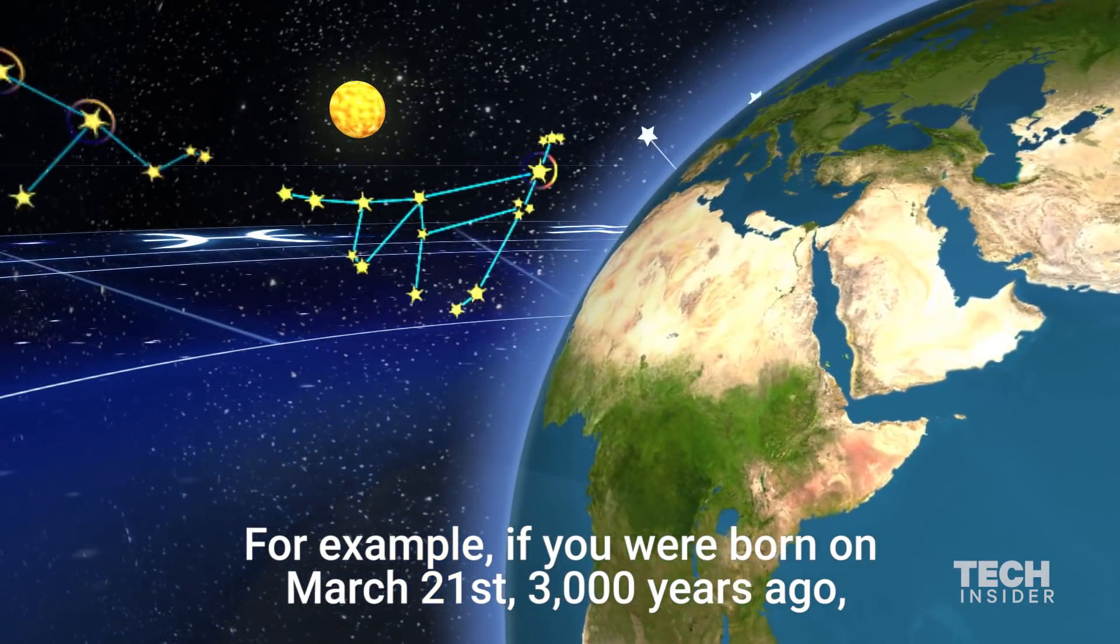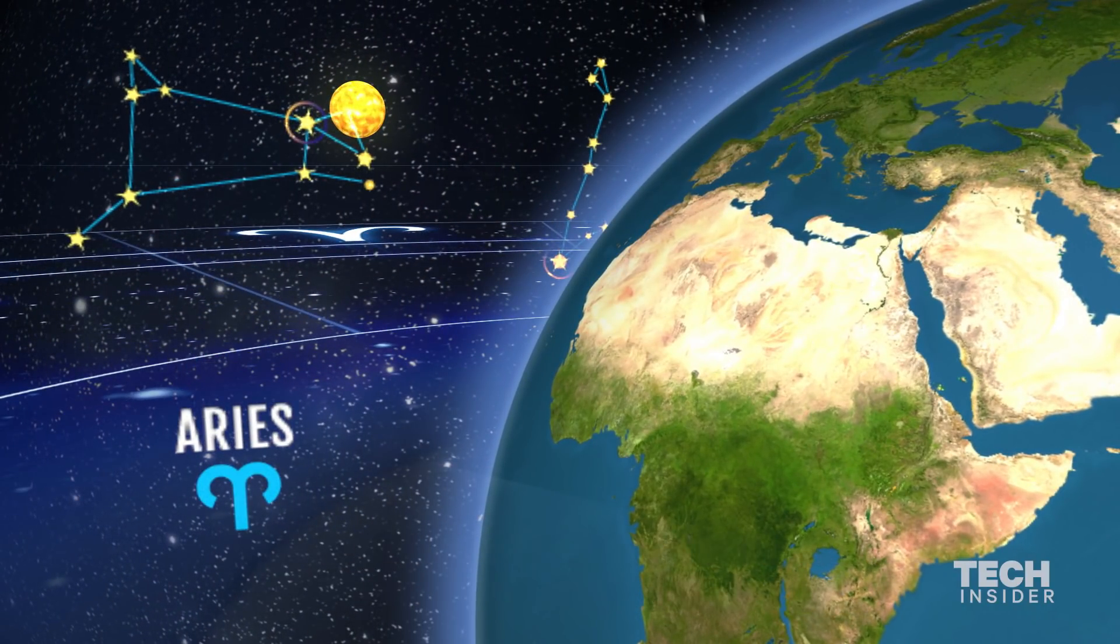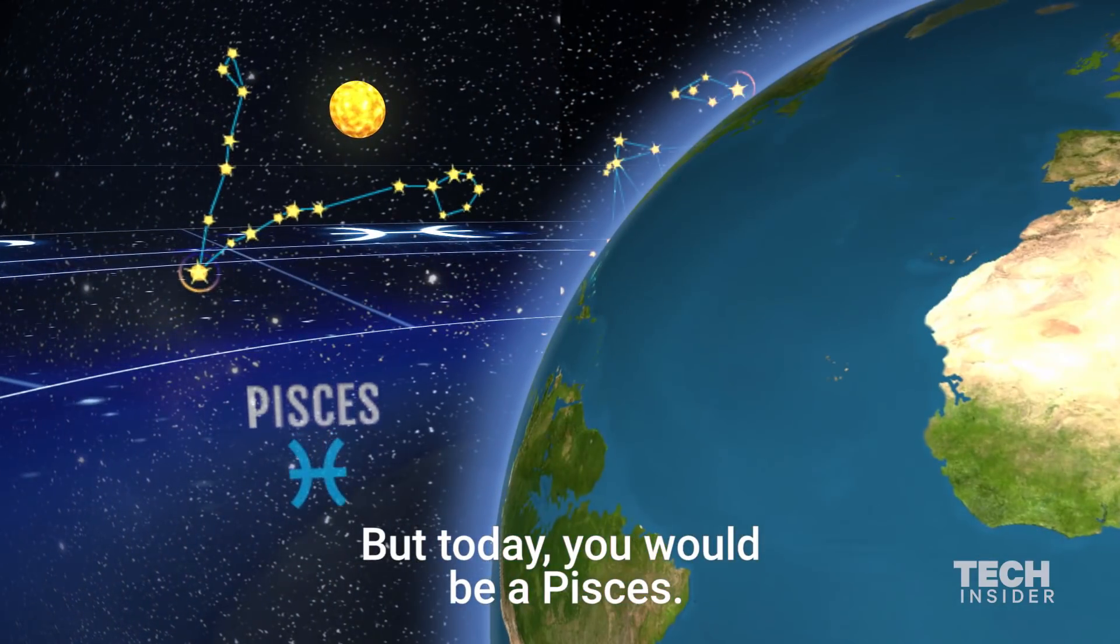For example, if you were born on March 21st 3,000 years ago, you would have been an Aries. But today you would be a Pisces.